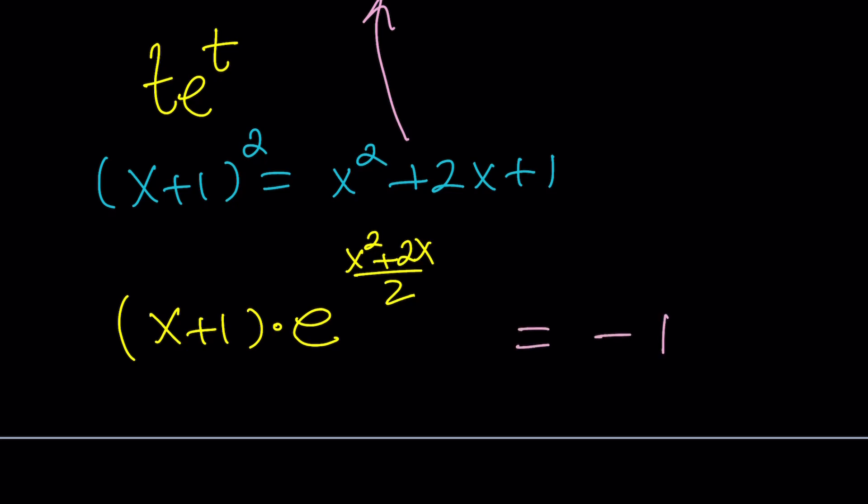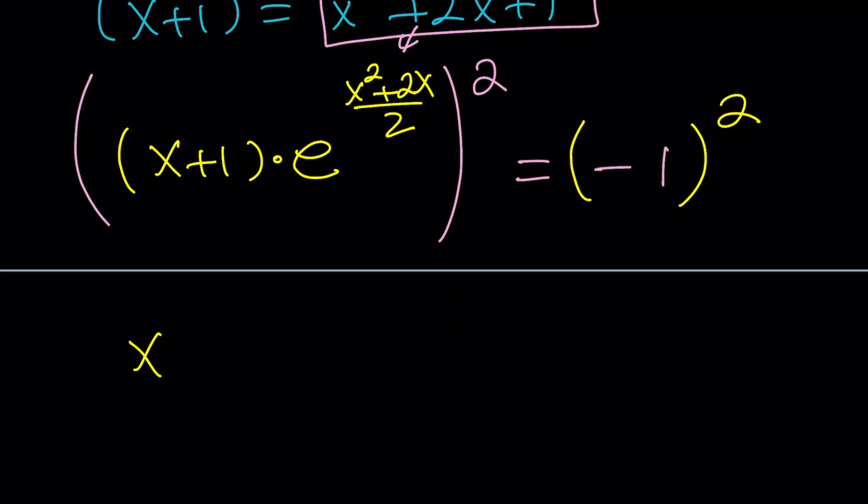And that should make a lot of sense because when you square this, you're going to get x plus 1 squared, which is this, which is pretty much connected to this. Make sense? But don't forget, we are supposed to square both sides. And when you square, x plus 1 will be squared, right?